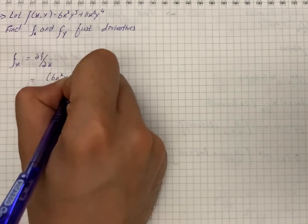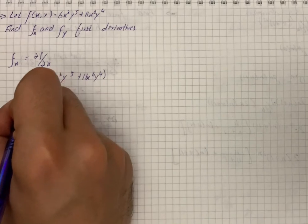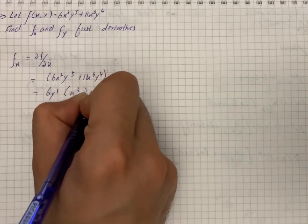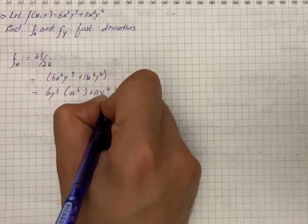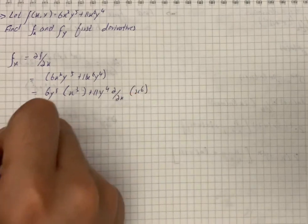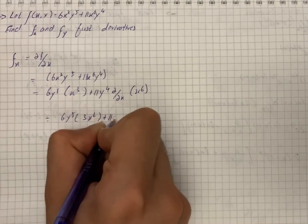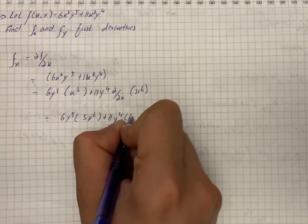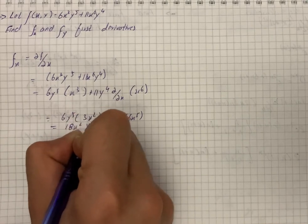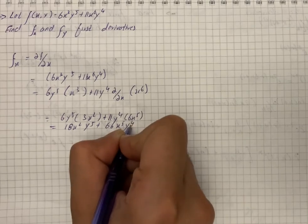6x³y⁵ plus 11x⁶y⁴. On simplification we have 6y⁵ into x³ plus 11y⁴ into the partial derivative of x into x⁶, and then we have 6y⁵ into 3x² plus 11y⁴ into 6x⁵, which gives us our solution: 18x²y⁵ plus 66x⁵y⁴.